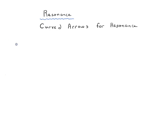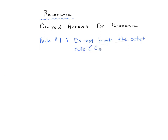We're going to show how to connect resonance forms using curved arrows. The most important rule is: thou shalt not break the octet rule. Do not break the octet rule unless you're talking about an atom in the row below C, N, O, F. For C, N, O, F, we never want to have more than eight electrons around an atom.